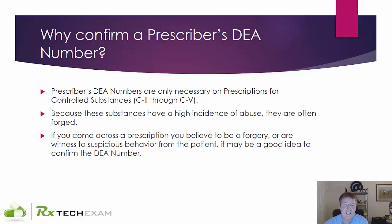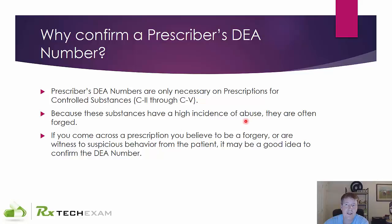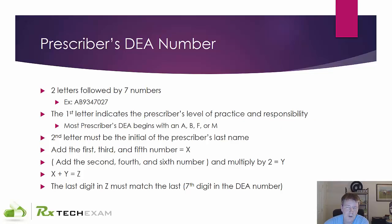The DEA number is required on prescriptions that are C2 through C5. It makes sense — you're not going to abuse something like Lipitor. People are much more likely to abuse Adderall or hydrocodone or things of that nature.